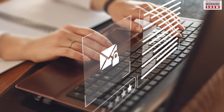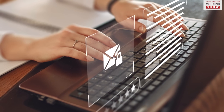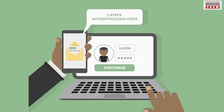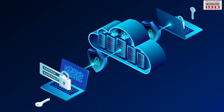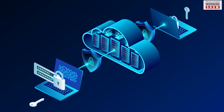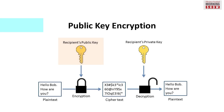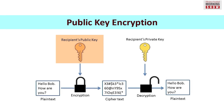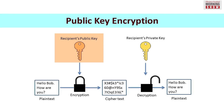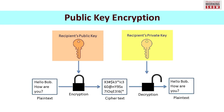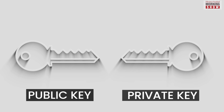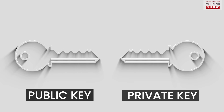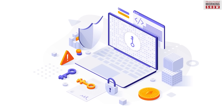When somebody sends you an encrypted message, their app uses your public key to encrypt the message. The encrypted message is sent over the internet; however, the public key can't be used to translate the message into its original form. To do that, you need your private key.